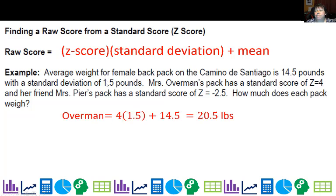So here I have backpacks on the Camino de Santiago, and let's say the average weight is 14.5 pounds, with a standard deviation of 1.5. I carried a very heavy backpack when I went hiking, and I would say my standard score or my z-score was 4. And my friend, Mrs. Pierce, Pierce, she had a very light pack, and her z-score was negative 2.5. So can we figure out how much each pack weigh? Sure. I am 4 standard deviations above the mean. 4 times 1.5 is 6 plus 14.5 is 20.5. For her, this is going to turn into a subtraction. It's going to be negative 2.5 times 4 plus the 14.5. So when I work it all out, I actually get 10.75.